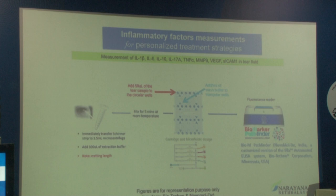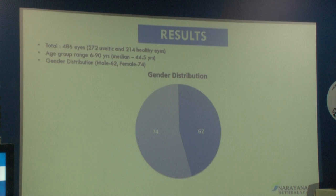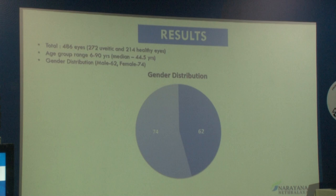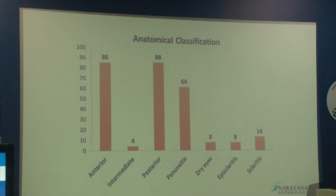On results, a total number of 486 eyes were evaluated, out of which 272 were uveitic and 214 were healthy eyes. The age group was 6 to 90 years with a median age of 44.5 years. Mainly females were around 74%. On anatomical classification, the maximum patients were of posterior uveitis, followed by anterior and pan-uveitis.